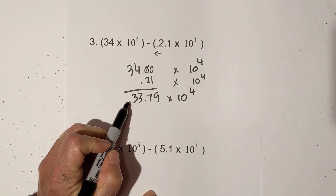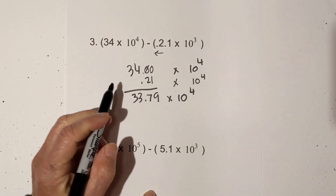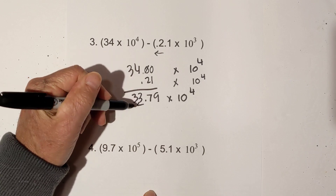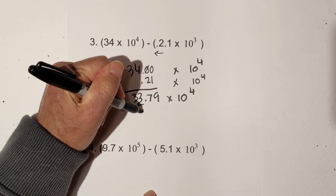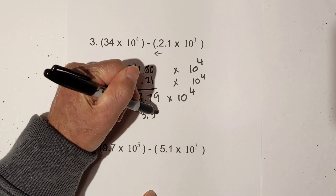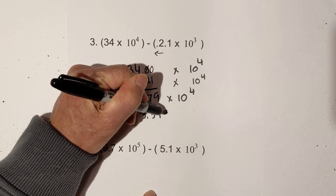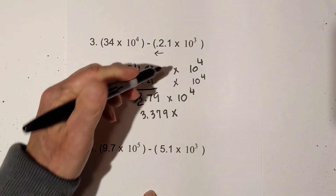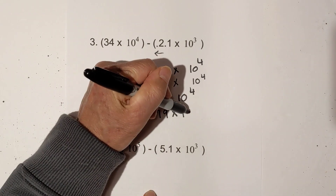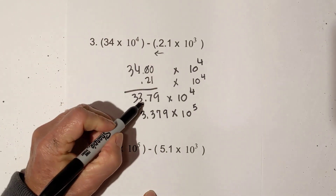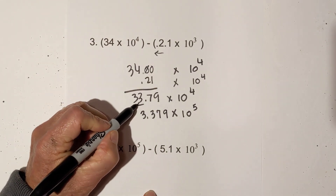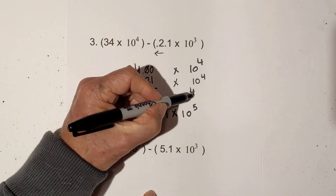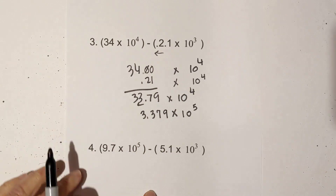This number is not between 0 and 10, so I need to move the decimal one place to the right, making it 3.379 times 10 to the 5th. Remember, I made it smaller by moving the decimal one place to the left, so I add 1 to the 4th — because when you go to the left the exponent gets larger.